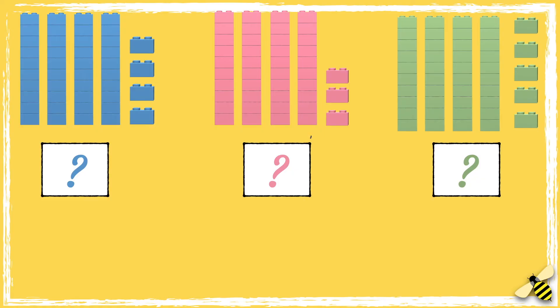Here are three different amounts. How many bricks are in each group? Which color has the least amount of bricks and which color has the most amount of bricks?